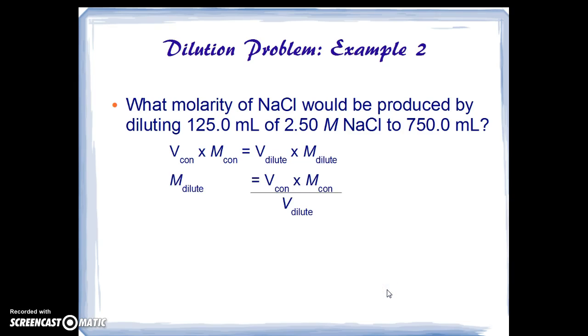We solve now for the molarity of the dilute solution of NaCl and we see the product of volume and molarity of the concentrated divided by the volume of the dilute. We plug in numbers and units and we see 125 milliliters is the volume of the concentrated and 2.5 molar is the concentration of the concentrated. We divide by 750 milliliters which is the ultimate volume of the dilute. And doing that we get 0.417 moles per liter.